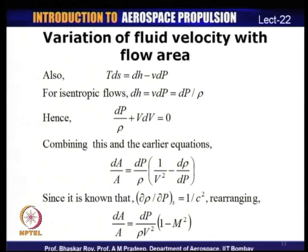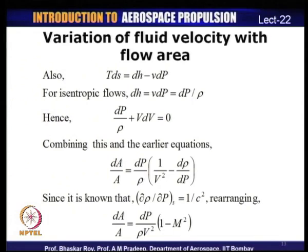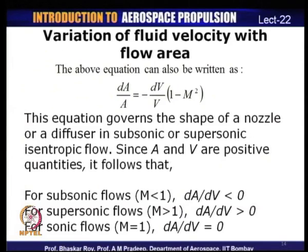From the mass balance equation: dA/A = (dP/ρV²)(1 − M²). Rearranging using dP/ρ = −V dV: dA/A = −(dV/V)(1 − M²). This equation governs the shape of a nozzle or diffuser in subsonic or supersonic isentropic flows.